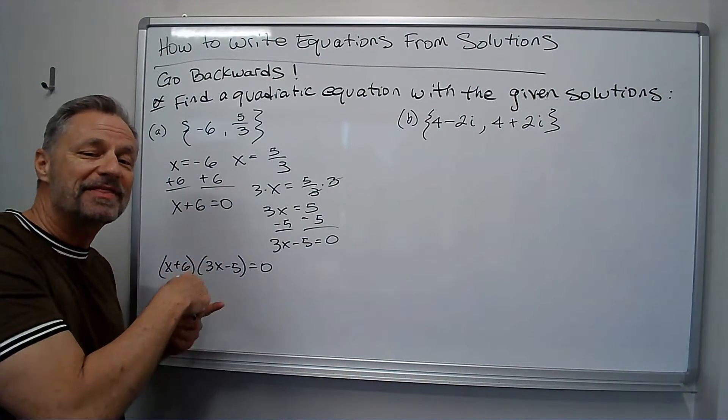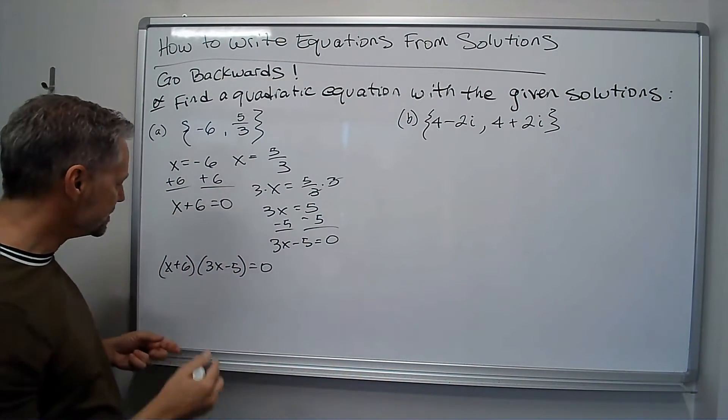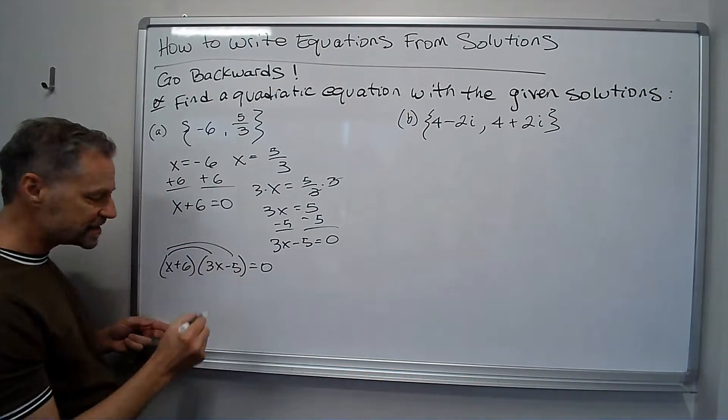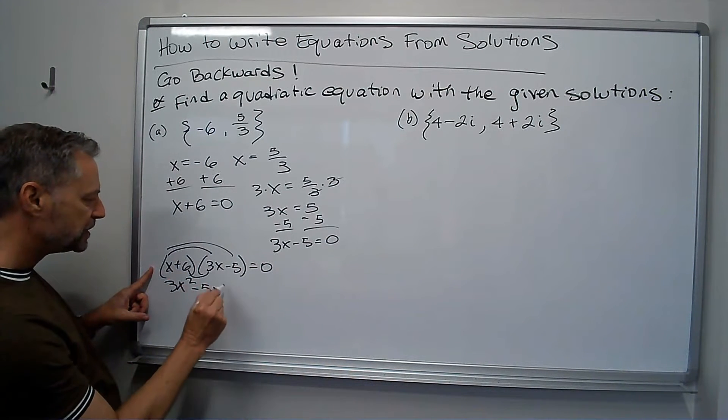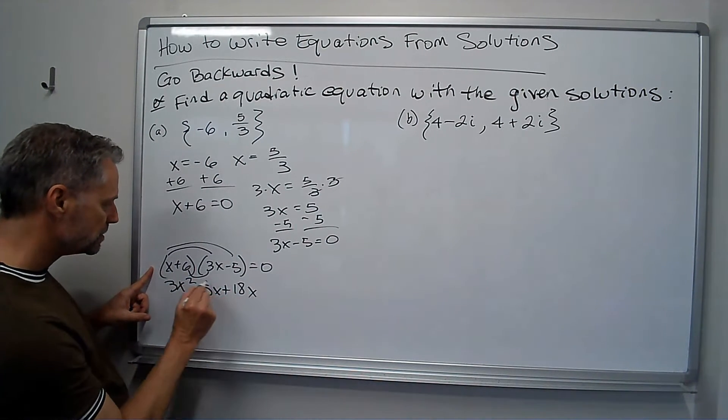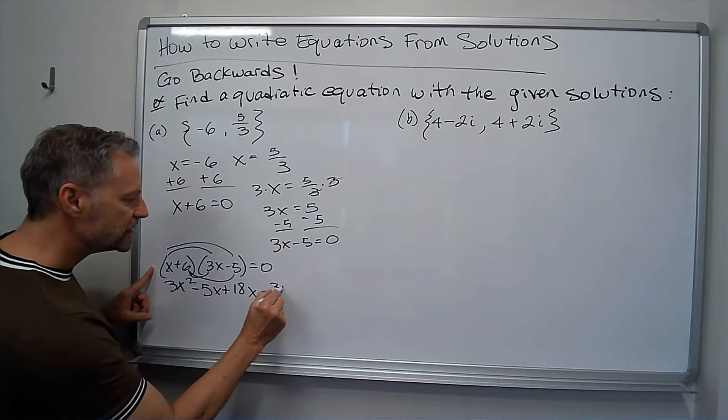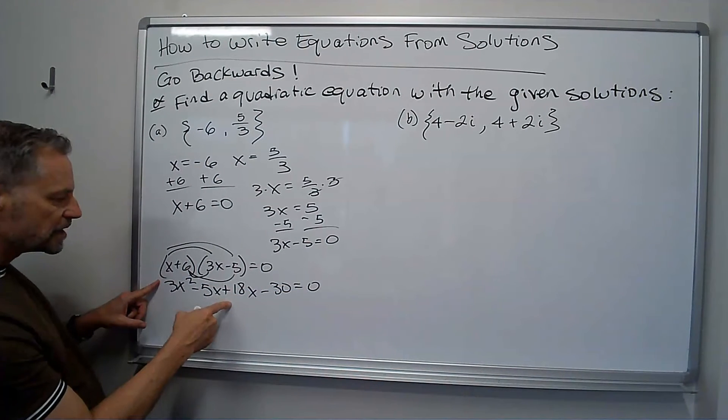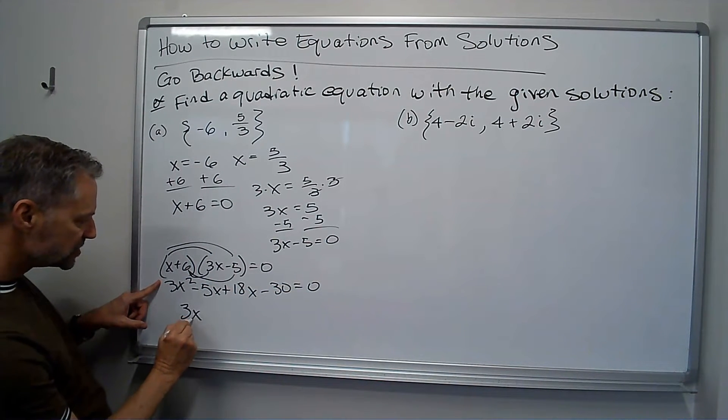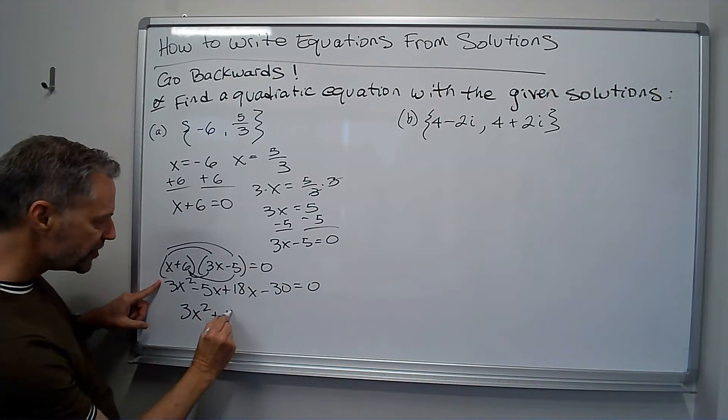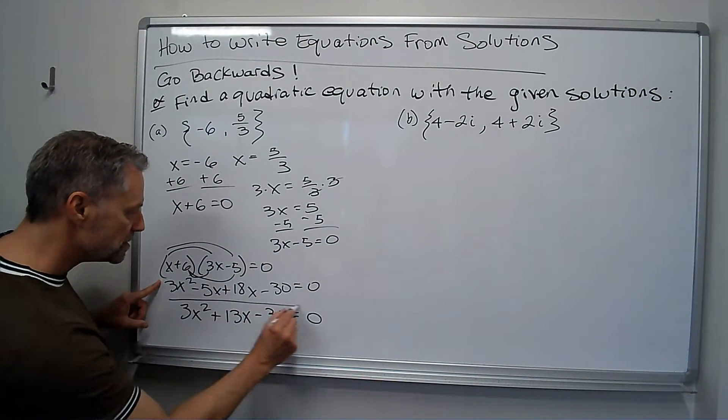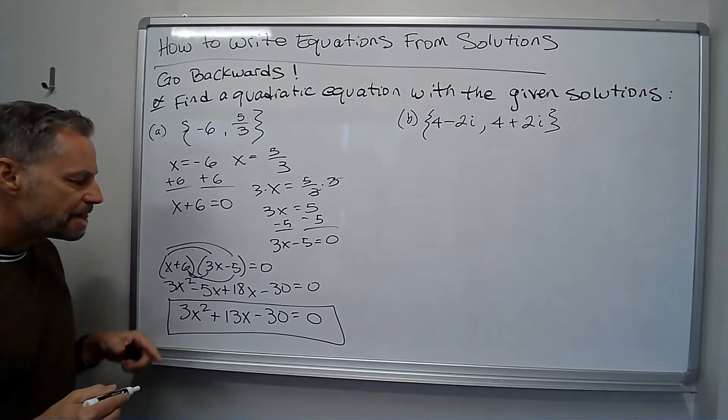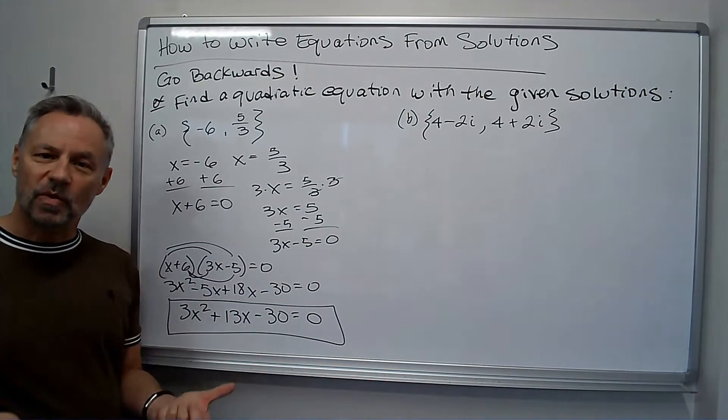I'm just going to multiply that, combine like terms and I'm done. We'll foil this out. I get three x squared minus five x plus 18x minus 30 equals zero. Combine these like terms. I get three x squared plus 13x minus 30 equals zero. And that was my original quadratic equation.